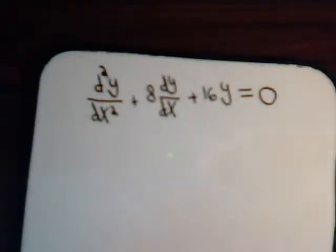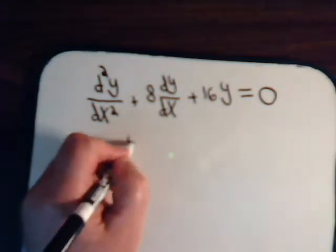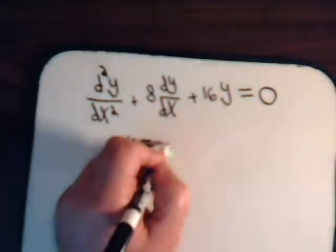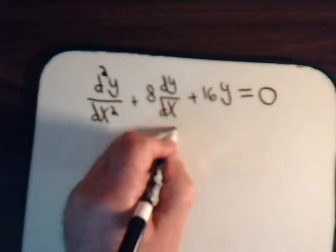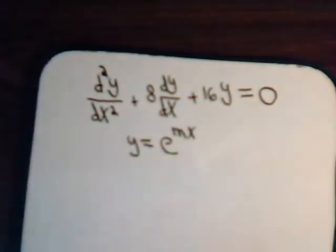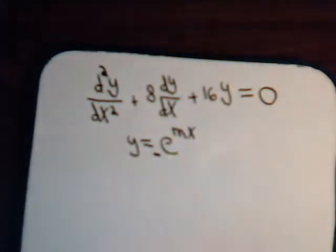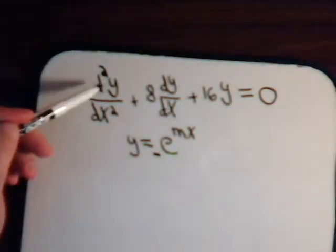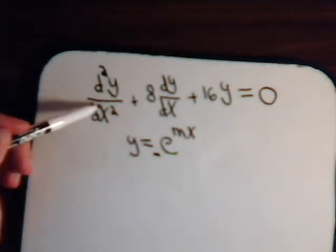Remember from our past videos that in general the solution is y equals e to the mx and we can have some constant here too. And m is determined by, we take the derivatives and replace it with m.